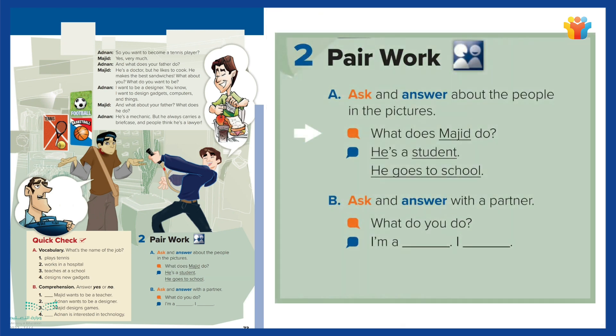Pair work. A: What does Majid do? He's a student. He goes to school.